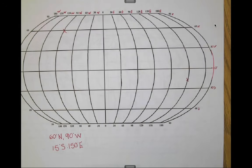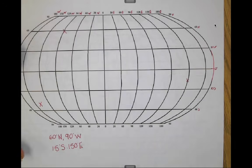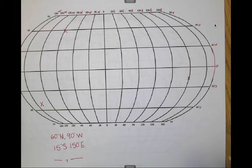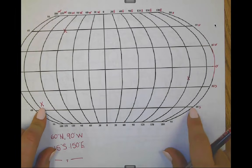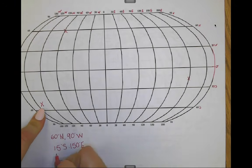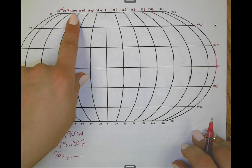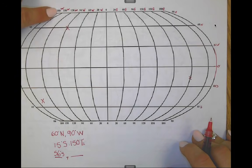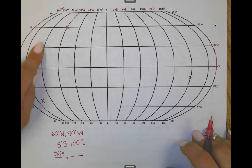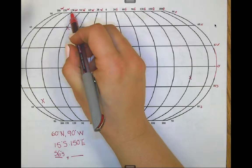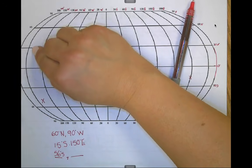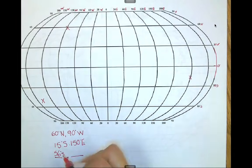Let's practice going the other way. We'll put a dot on the map and work toward finding the latitude and longitude. First, is it north or south? This one's definitely in the southern hemisphere, located between 30 and 60 — I'd say about 56 degrees south. Now looking east or west, it's definitely in the western hemisphere. I can't just come straight down — I have to bend with my lines. My point is between 150 and 120, maybe a little more toward 150, so that's going to put me at about 140 degrees west.